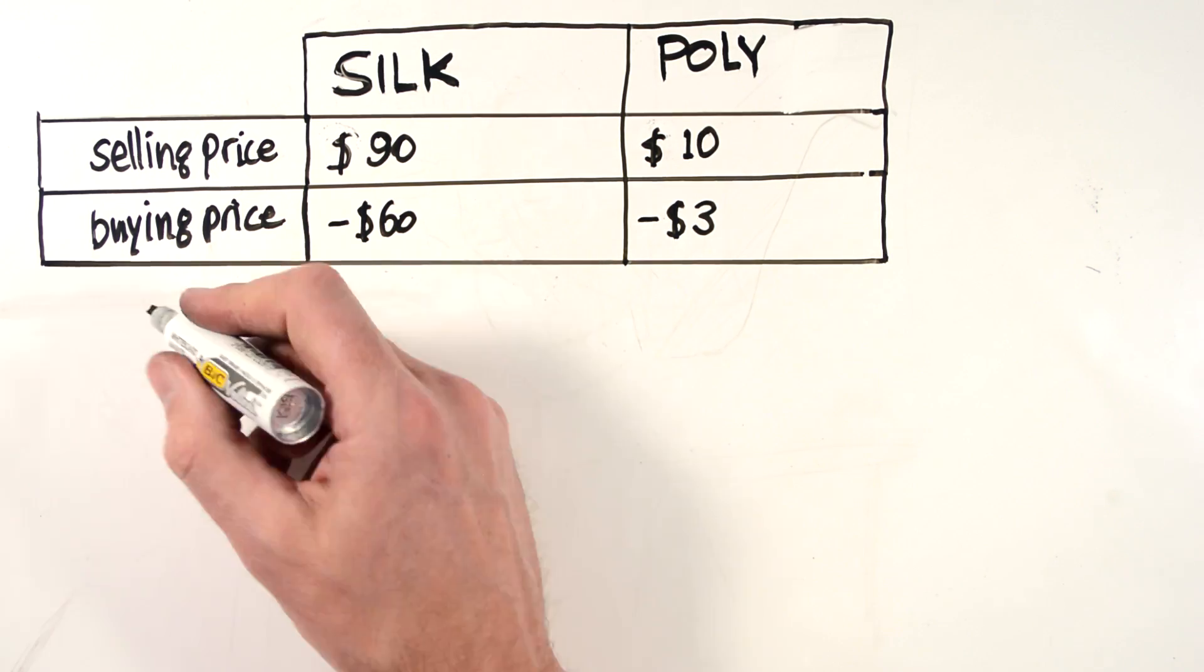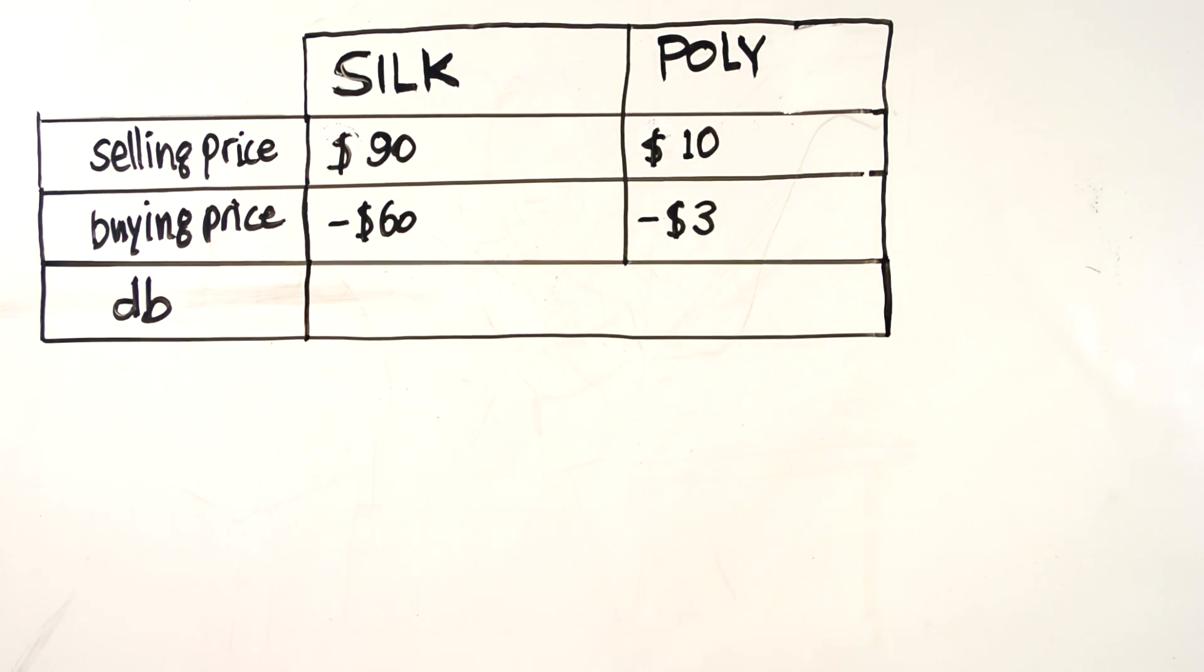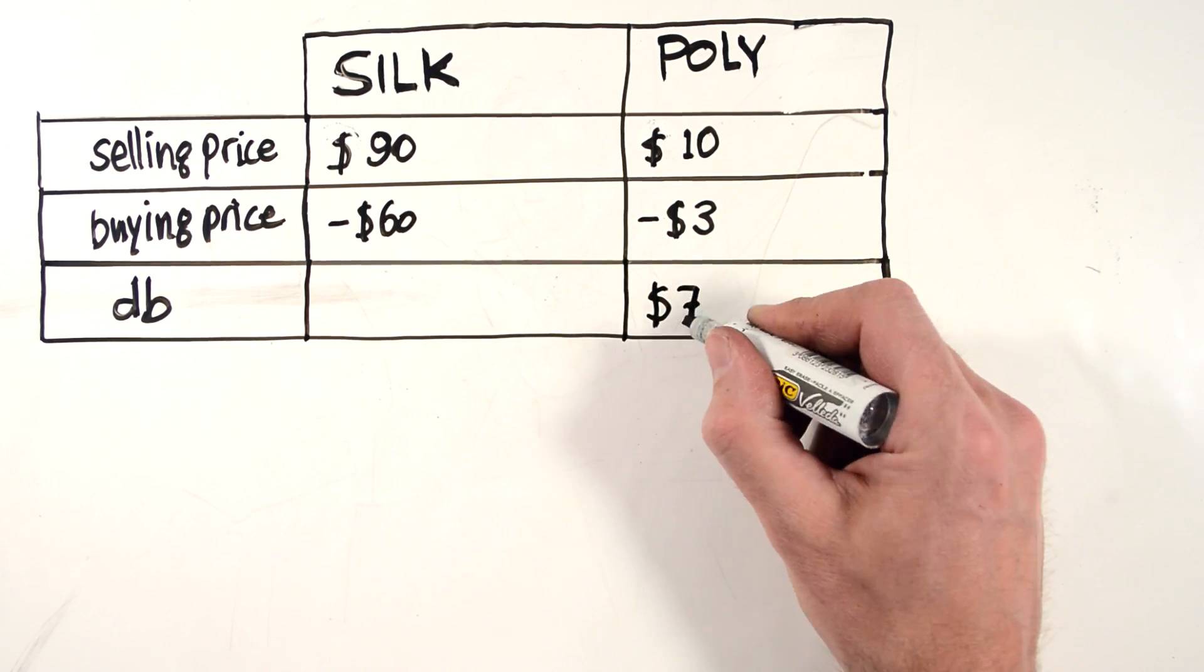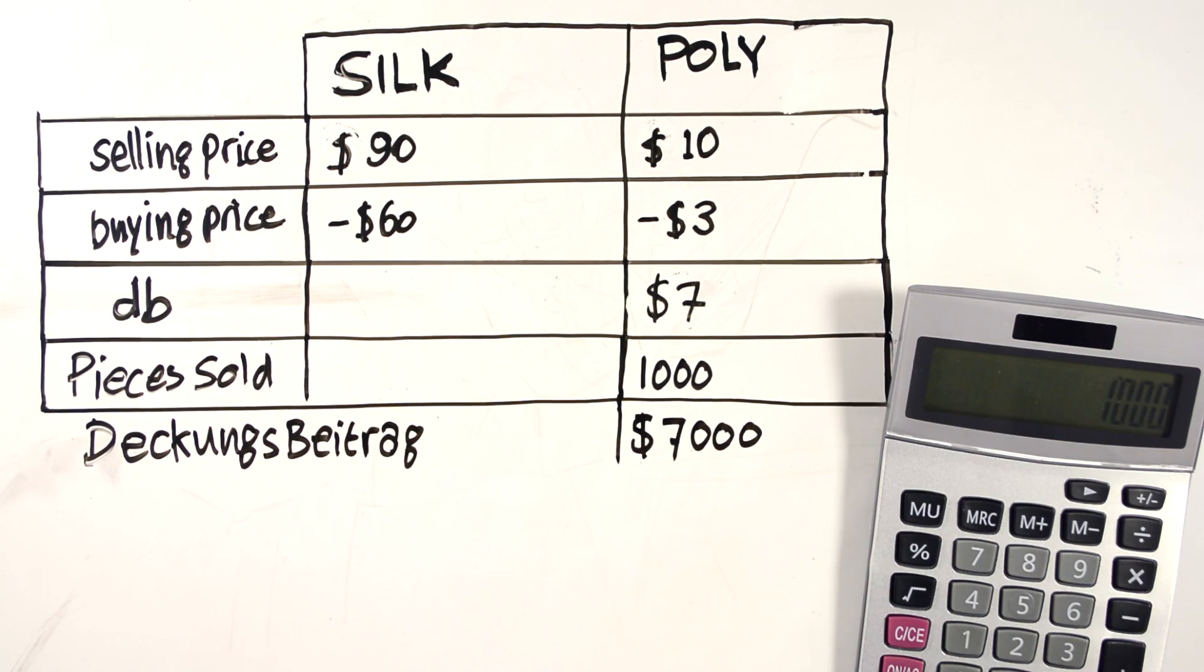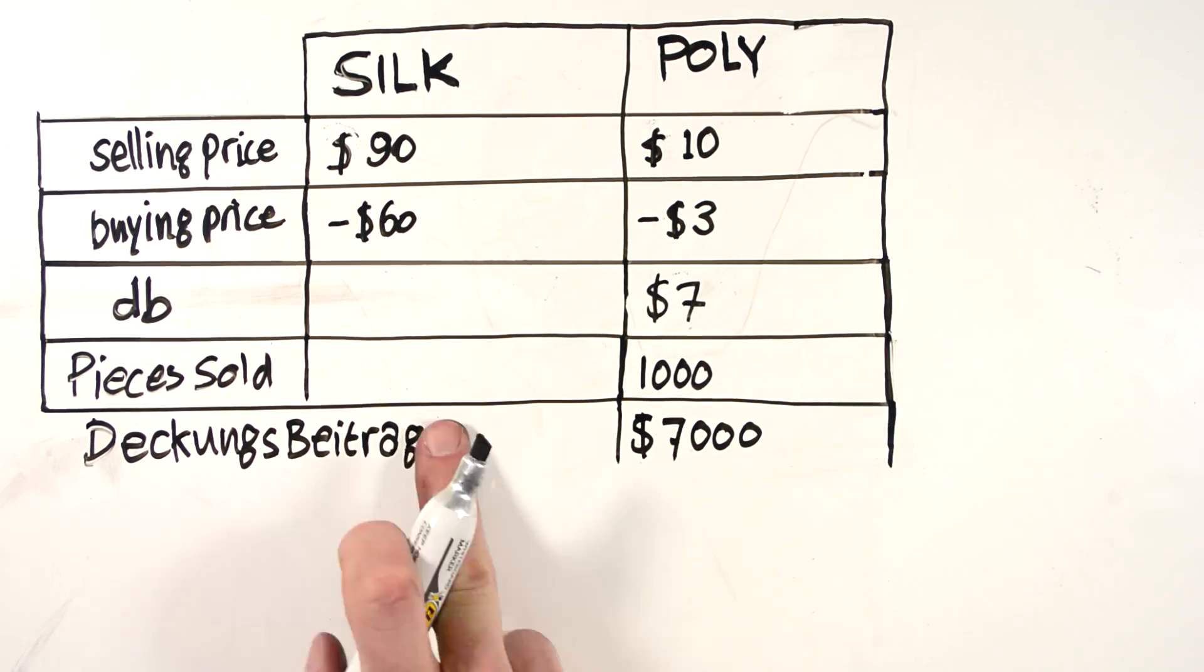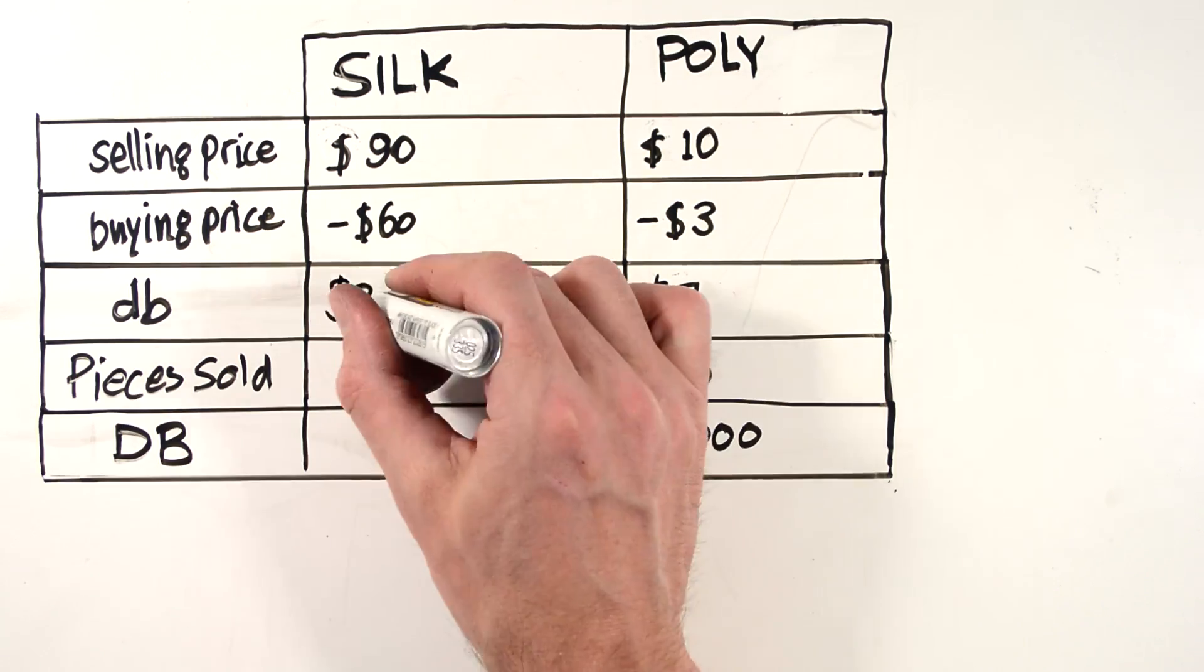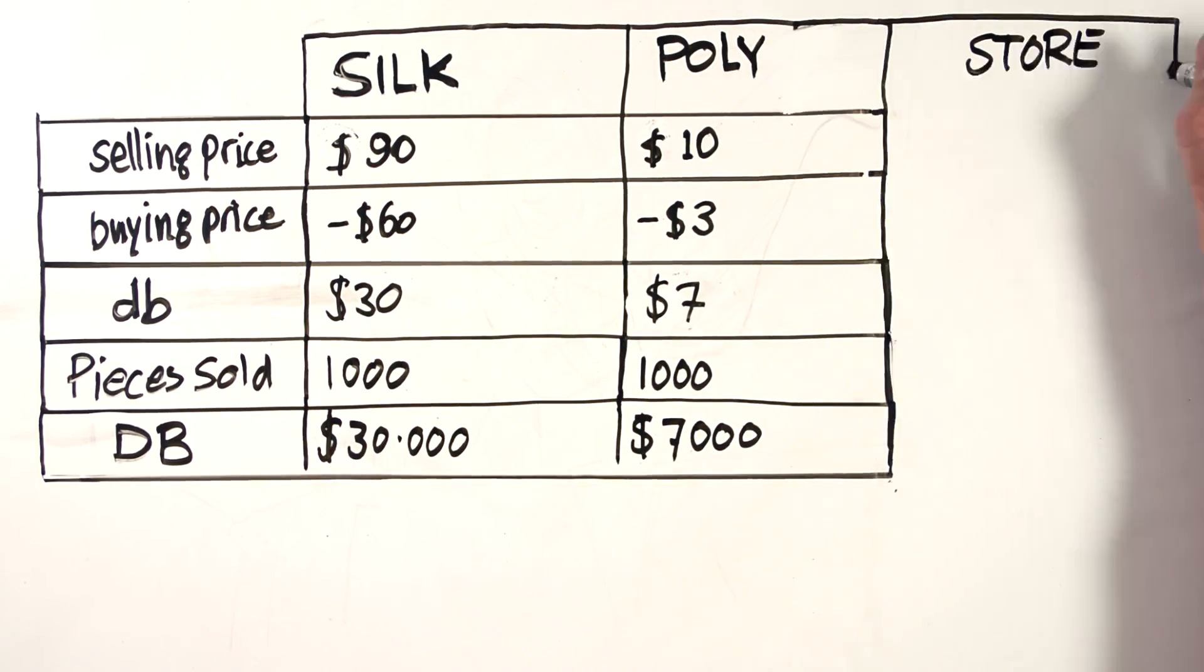Per polyester dress, the customer pays CNA $7 and 1,000 dresses are sold, resulting in a dekkungsbeitrag of $7,000 with a capital DB. This helps fund CNA's operating expenses: rent, salaries, etc.